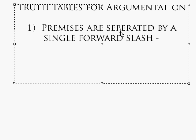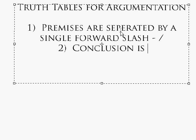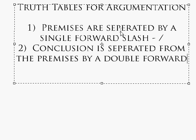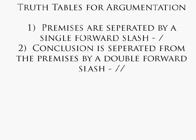Number two: the conclusion is separated from the premises by a double forward slash. So premises are separated by a single forward slash and the conclusion is separated by a double slash.